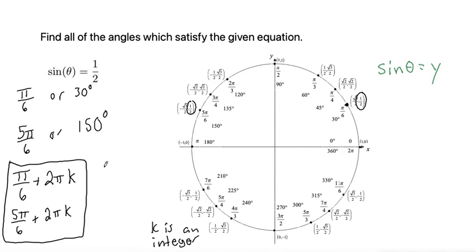But if we want our answer in degrees, we would start with our two solutions, the 30 degrees. But now we could also go all the way around. If we're in degrees going all the way around is 360 degrees.